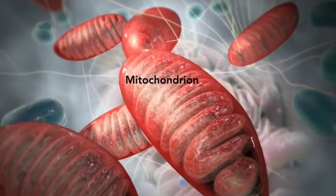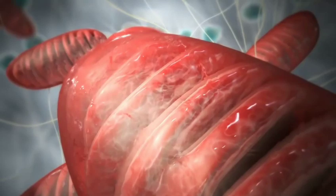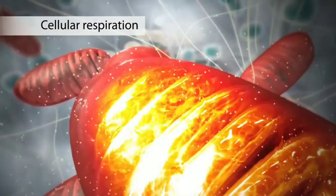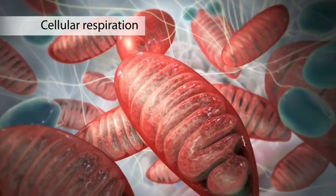The mitochondrion is an organelle that is the powerhouse for both animal and plant cells. During a process called cellular respiration, the mitochondria make ATP molecules that provide the energy for all of the cell's activities. Cells that need more energy have more mitochondria.